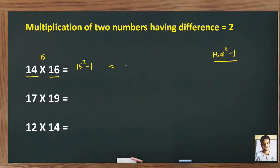15 square is how much? 225 minus one, that means 224. This is the answer. Similarly here, 17 into 19, the middle number is 18. 18 square minus one. To apply this trick, you have to know the square values of these numbers.